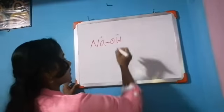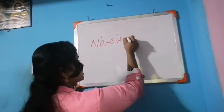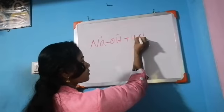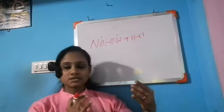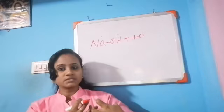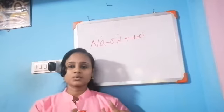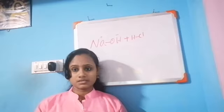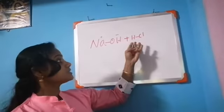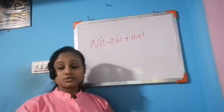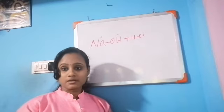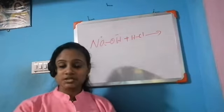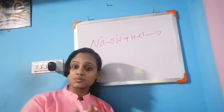Sodium hydroxide reacts with hydrogen chloride. There is a chemical bond in hydrogen chloride as well, and this chemical bond needs to be broken. After the chemical reaction, we can observe that a new substance is formed. Here rearrangement happened.